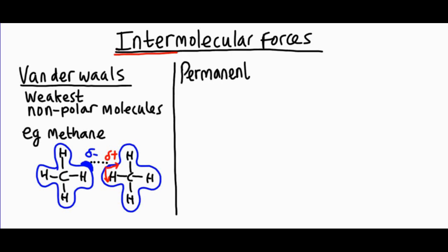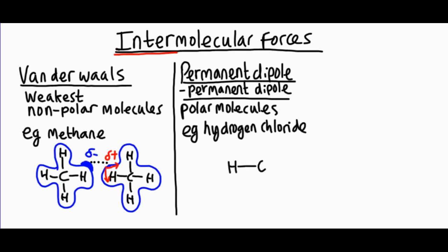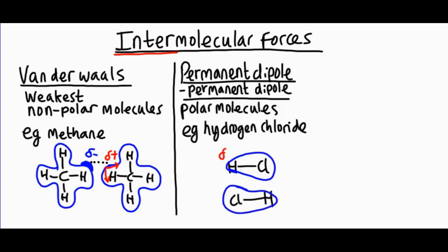The next type is called permanent dipole–permanent dipole. We're now talking about dipoles that are permanently present on molecules — not temporary random fluctuations in electron density. This is the intermolecular force that acts between polar molecules, for example hydrogen chloride (HCl). Chlorine is more electronegative than hydrogen, so it tugs the electrons in the covalent bond towards itself. The electron cloud is not evenly distributed — there's more electron density on chlorine, leaving hydrogen with a delta plus and chlorine with a delta minus. Opposites attract, so the delta plus and delta minus on two different molecules hold them together.